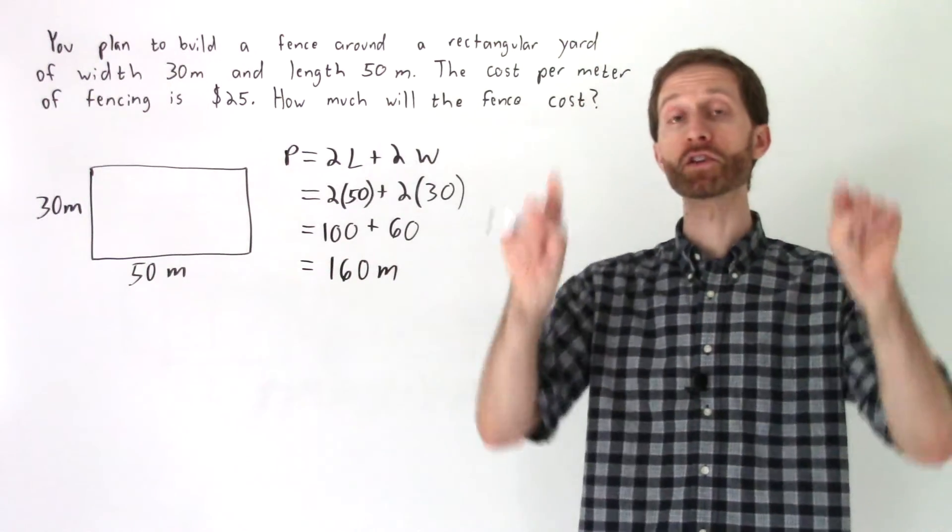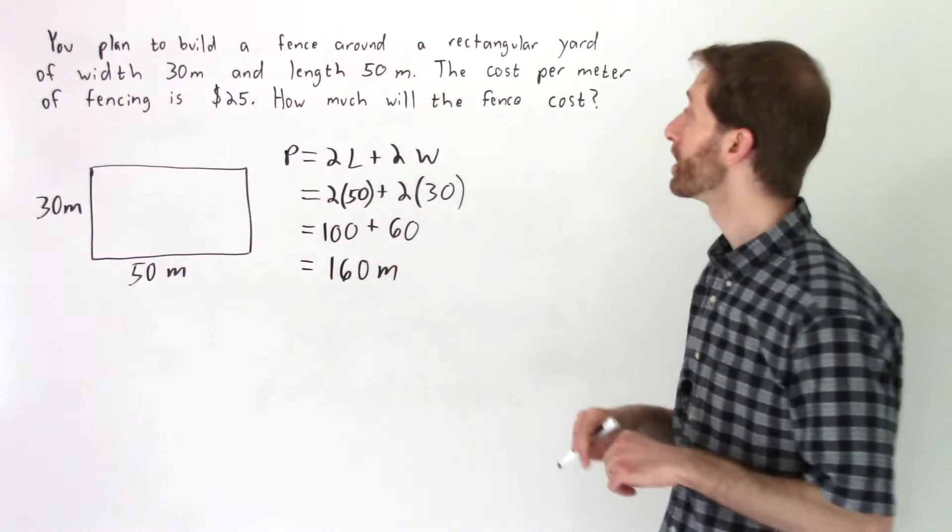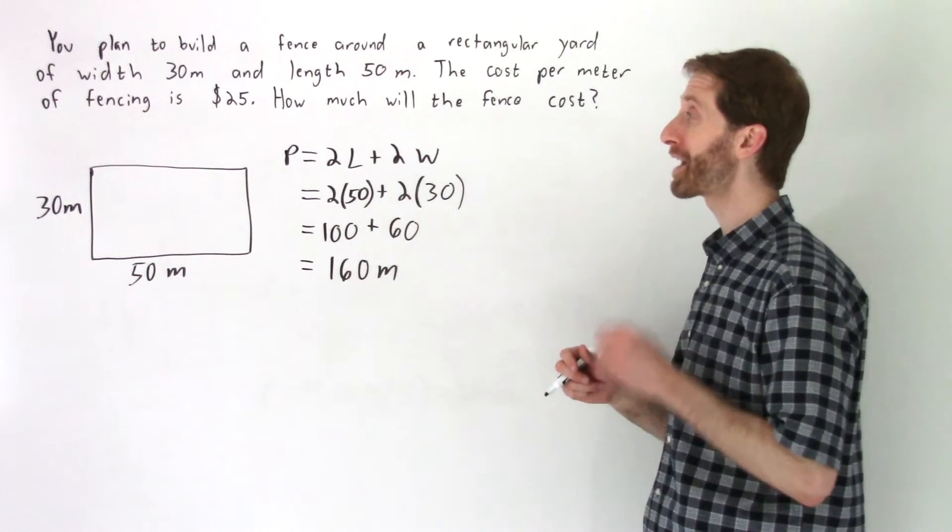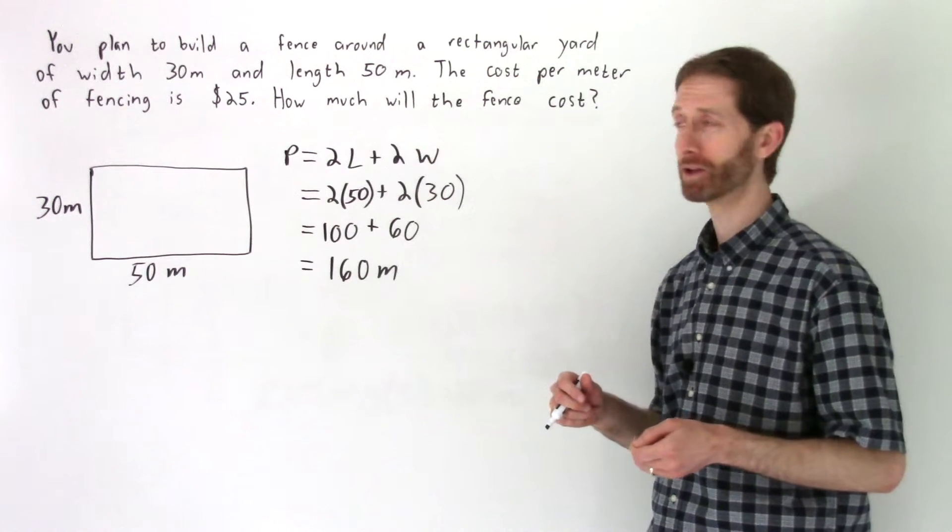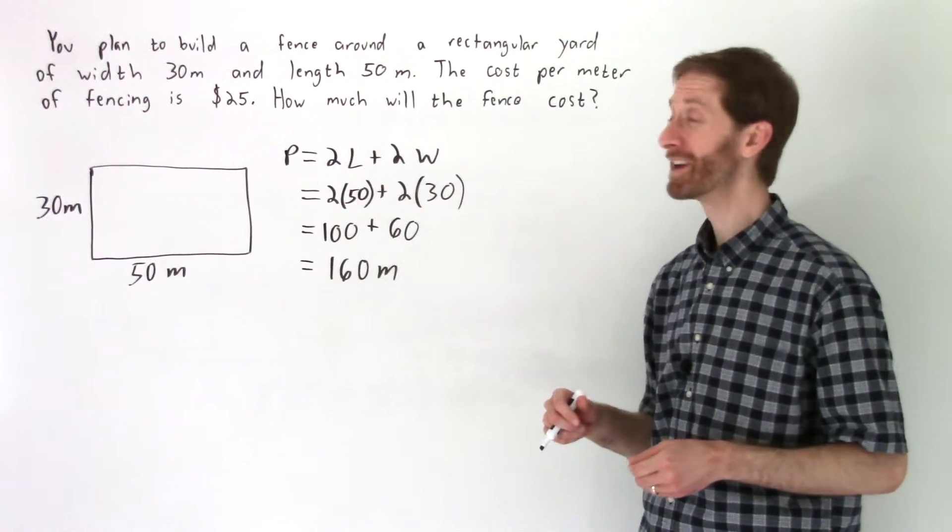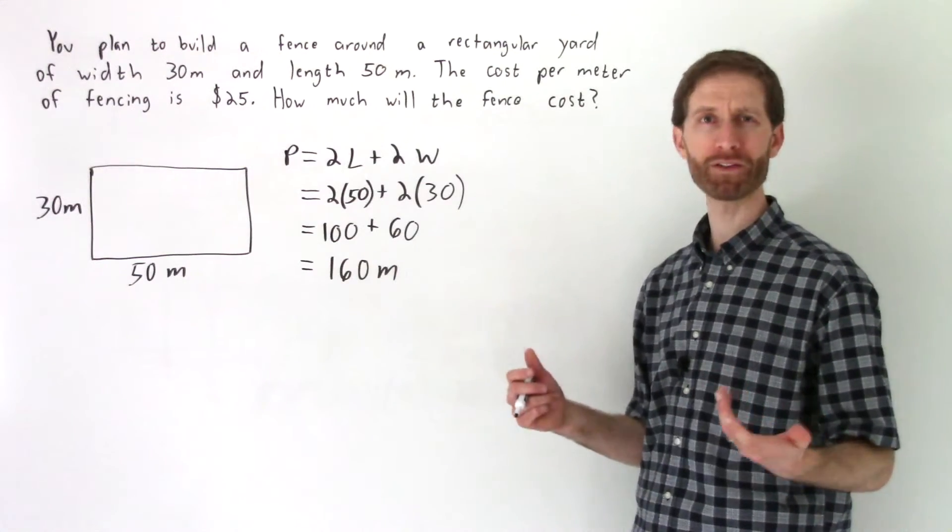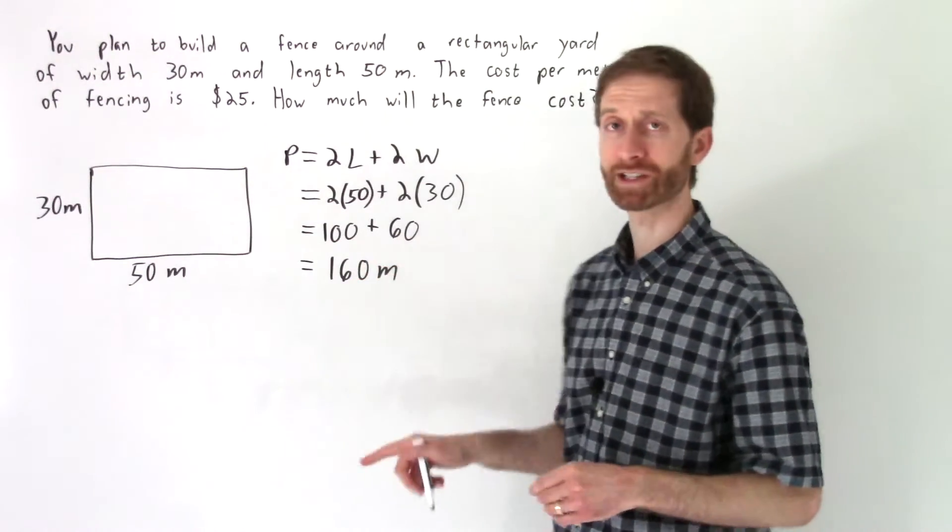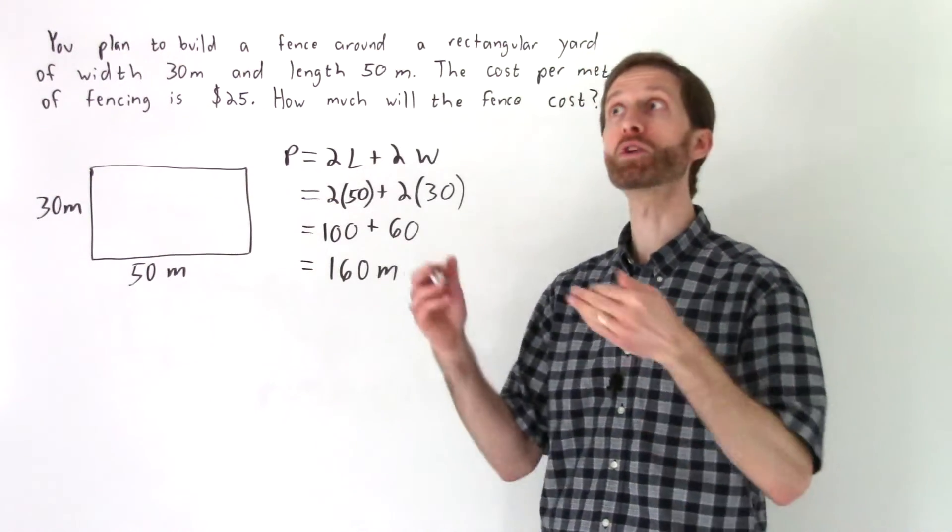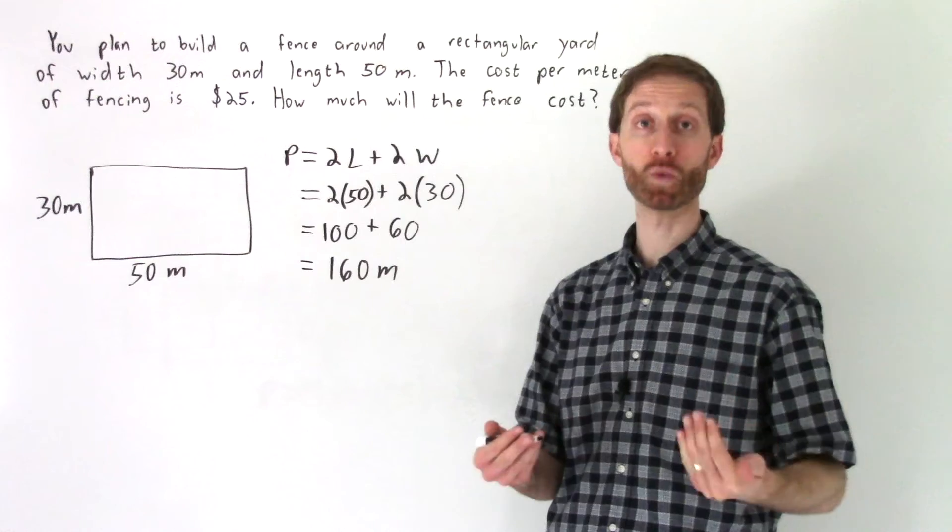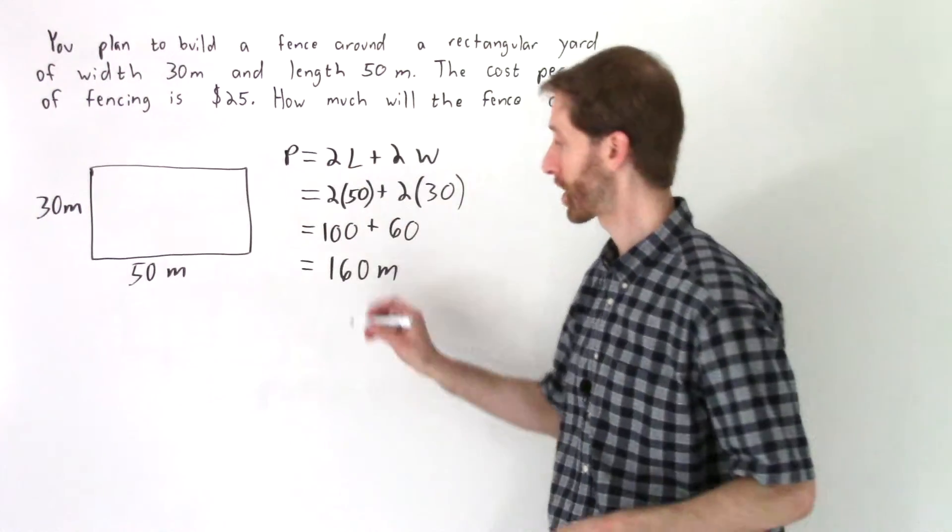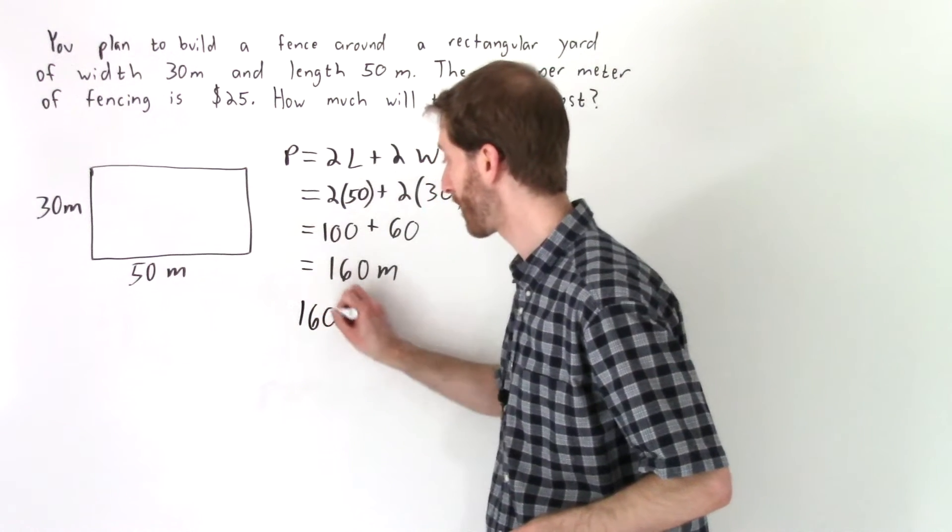We found the perimeter because we wanted to know the total amount of fencing we used. Now our fencing is going to be $25 per meter and we have 160 meters. How do we figure that out? Well we have 160 meter sections, so 160 $25 sections. So we would multiply 160 by 25 because for every one meter we're adding $25.